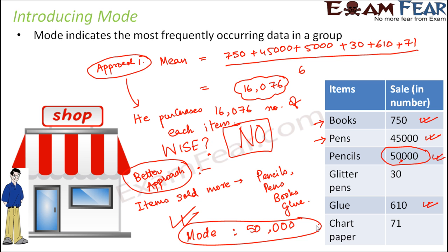Now you understand why we need to find the most frequently occurring data. In situations like the shopkeeper's, you need to know which data occurs more often. Mode also tells us the central tendency of a group of data, but in a different sense than mean. When we talk about mean, it finds an average — a number that lies between the smallest and largest values, representing central tendency. Mode also represents central tendency because it tells us which data gets repeated most often.